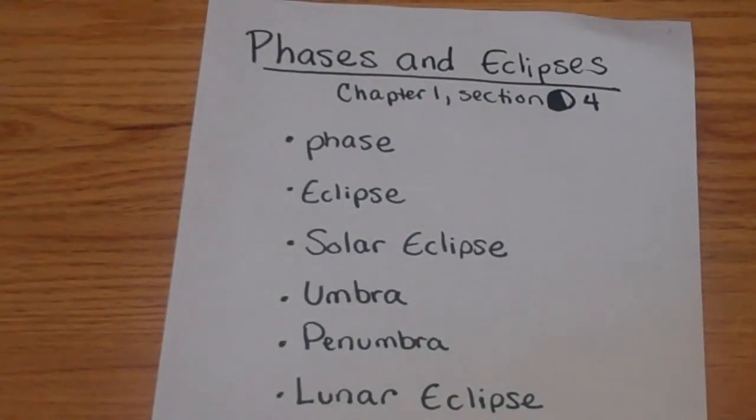Okay, so today what we're going to talk about is Chapter 1, Section 4, Phases and Eclipses. The words we're going to look at today are phase, eclipse, solar eclipse, umbra, penumbra, and lunar eclipse.